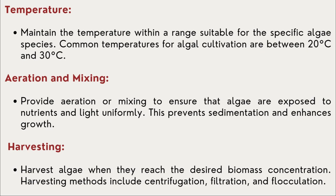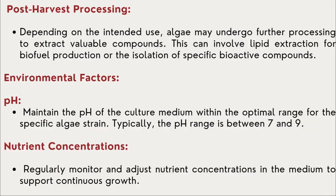Harvesting of algae when they reach their desired biomass concentration — harvesting methods include centrifugation, filtration, flocculation, etc. The post-harvest process depends on the type of algae being cultivated and the type of product being targeted. The environmental factors play an important role: the typical pH range is 7 to 9. We need to monitor regular nutrient concentration in the media in order to support its continuous growth until it reaches its peak.